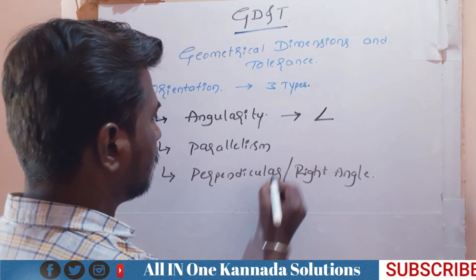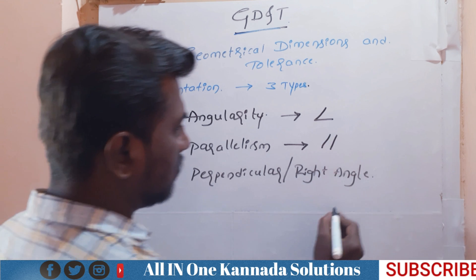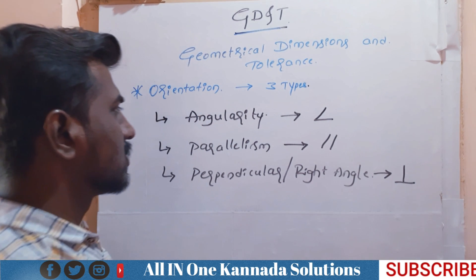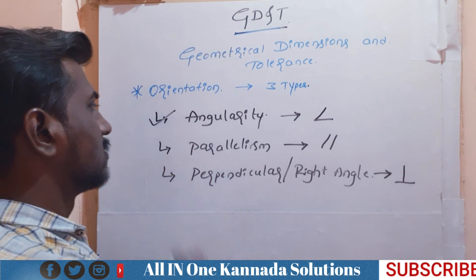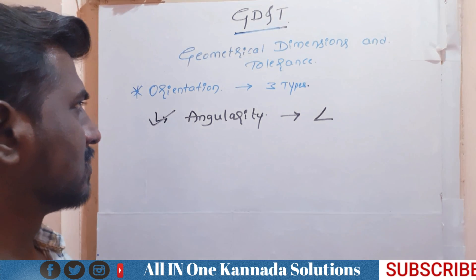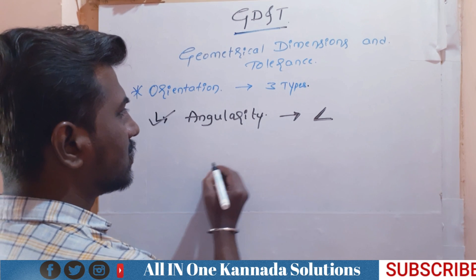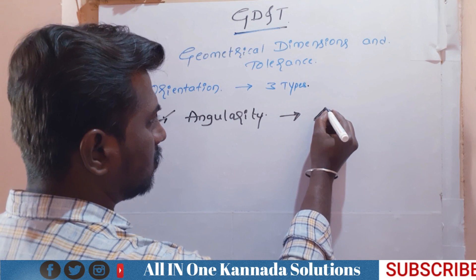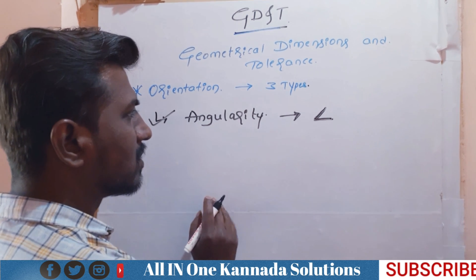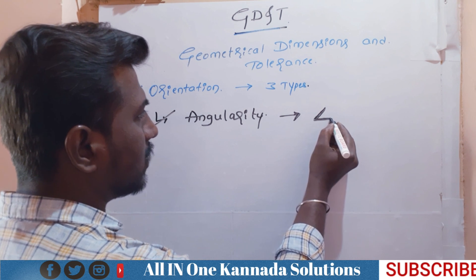So angularity symbol — one bit GD&T. Parallelism symbol — one bit GD&T. Perpendicularity symbol — one bit GD&T. Angularity means orientation with respect to, or related to, a datum — orientationally.